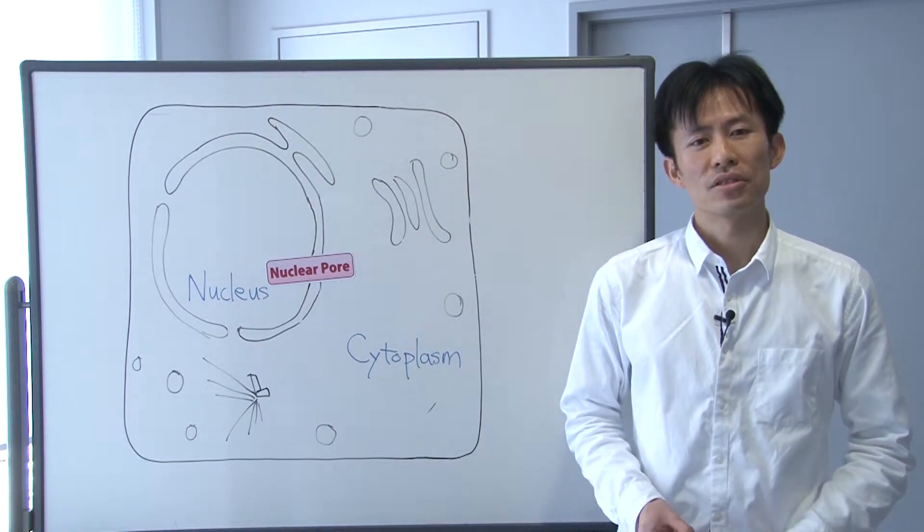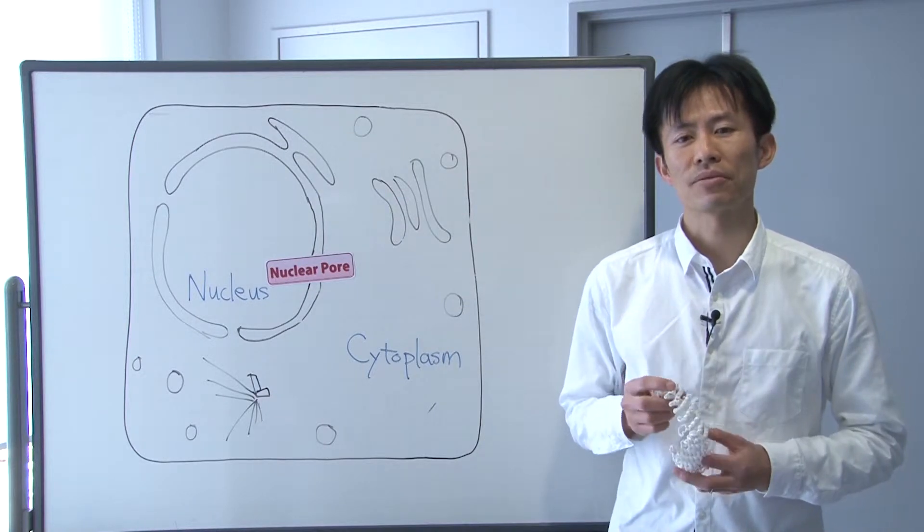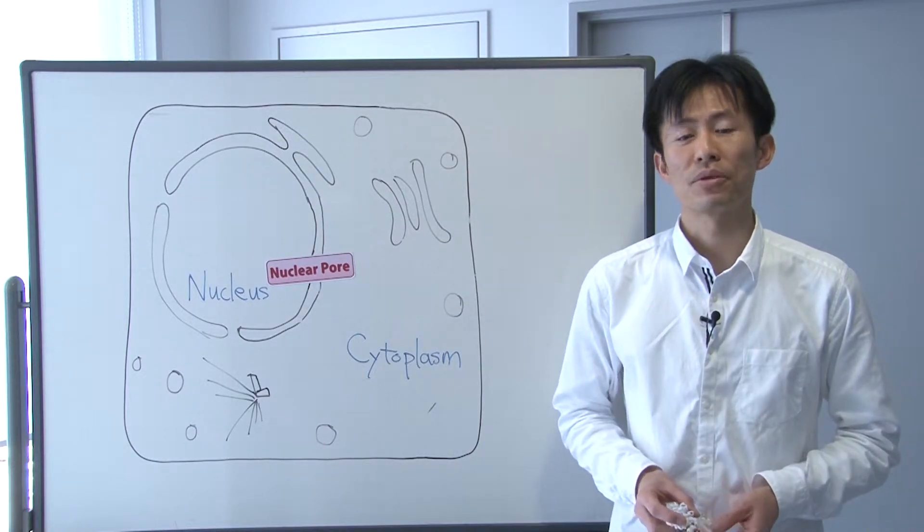Some proteins, such as importin beta, are highly flexible and it plays a critical role in passing through the molecular crowding.